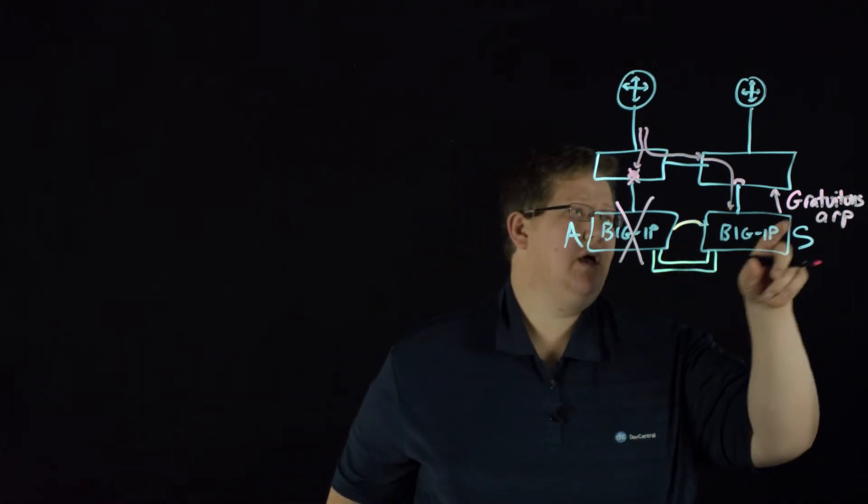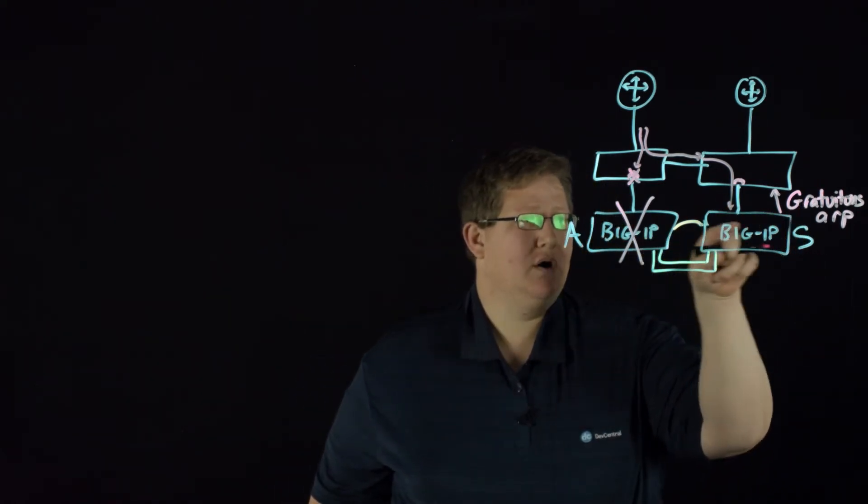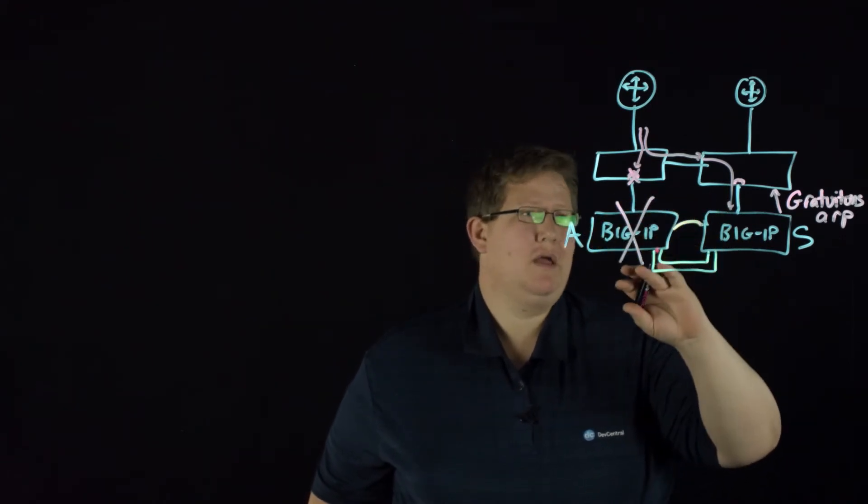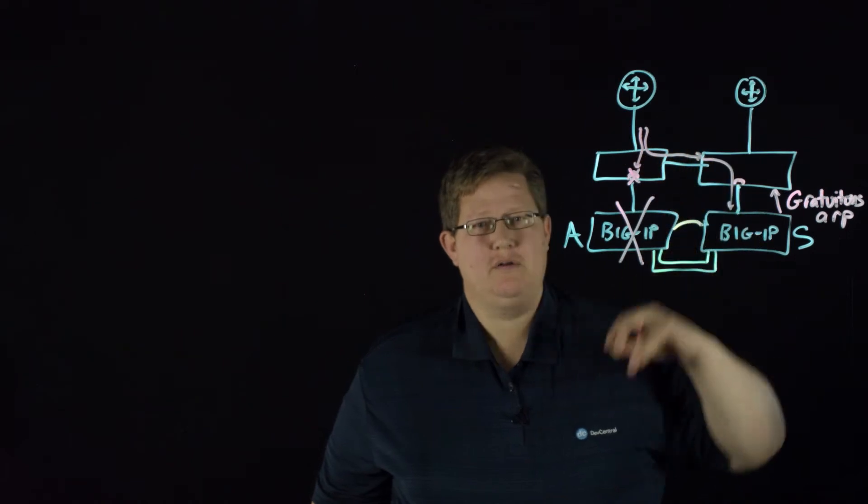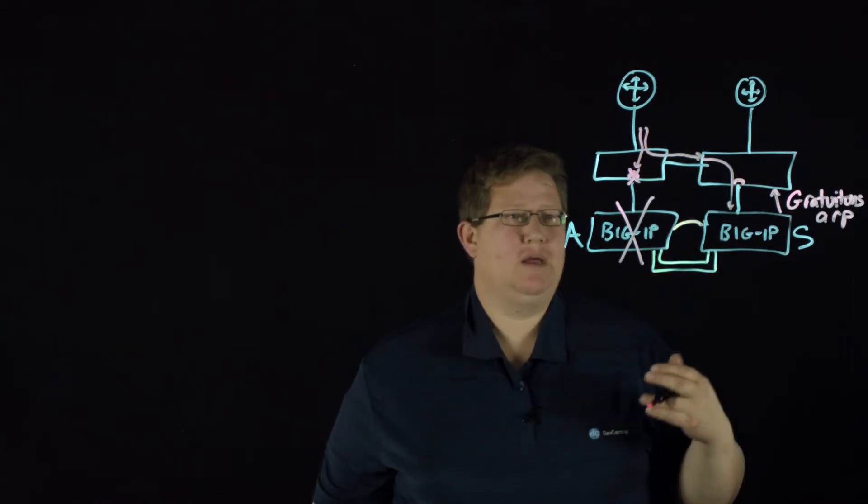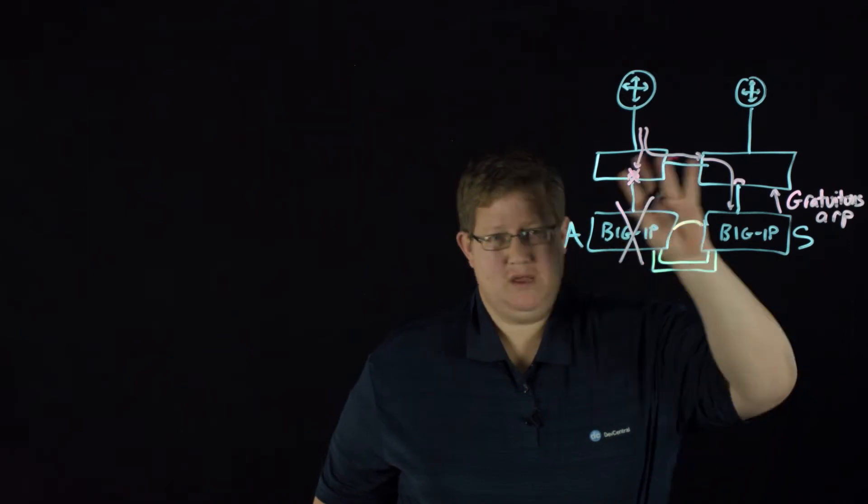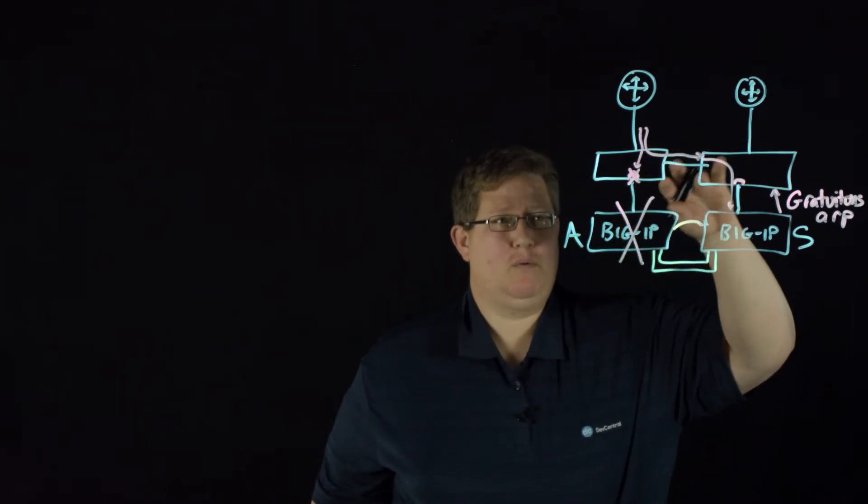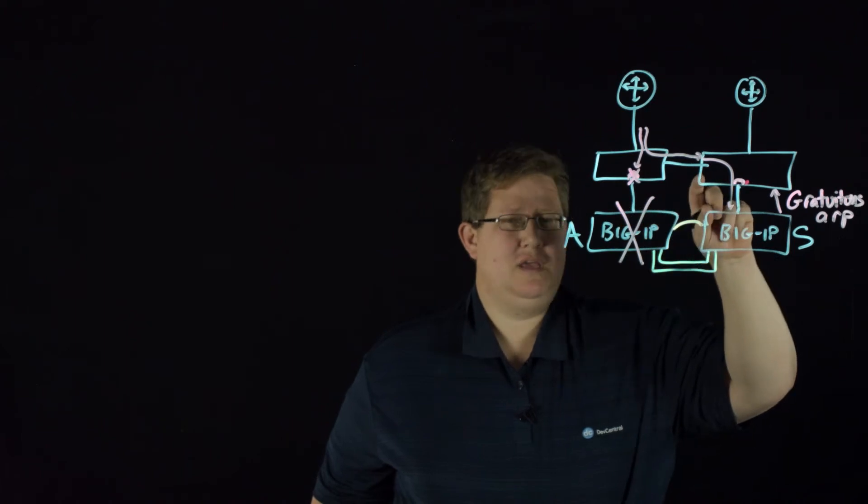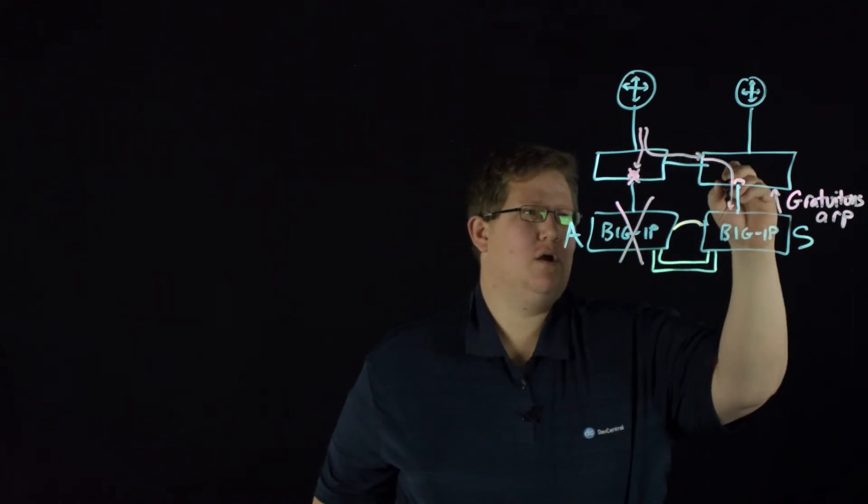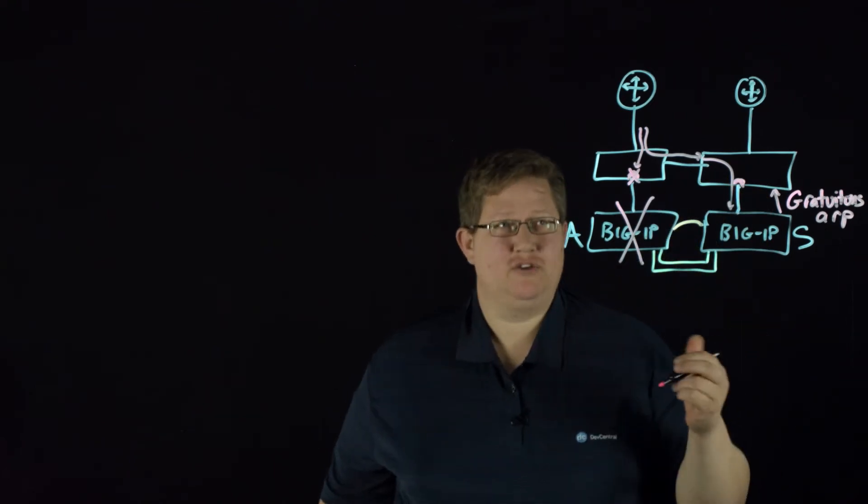You have a shared unique address for these two BIG-IPs so that when there is a failure, it's seamless. There doesn't need to be a rediscovery of that address in the system. The switching network will move the location of that same MAC address from here over to this port, and then everything should continue to work.